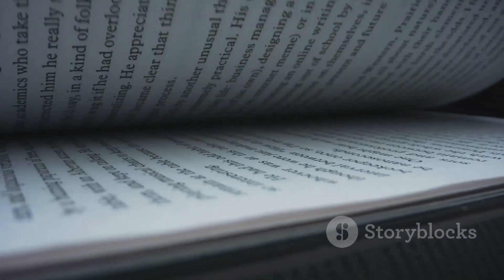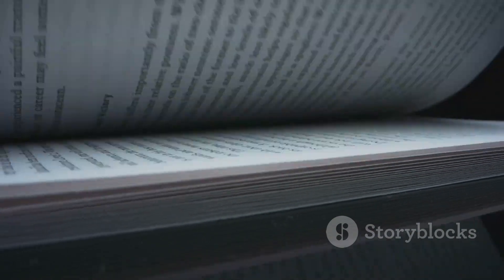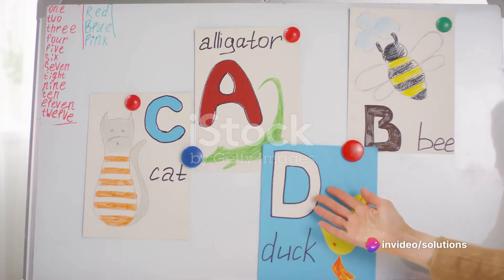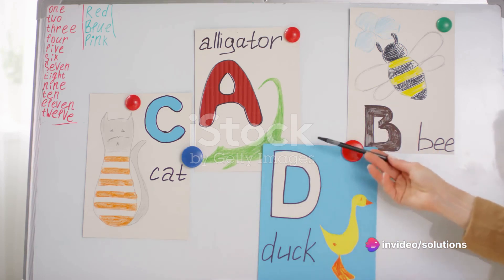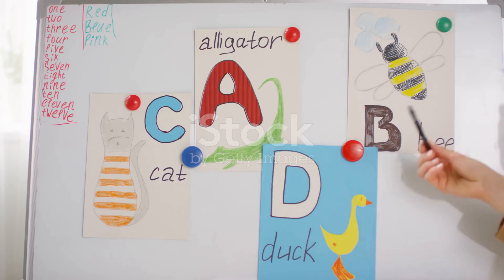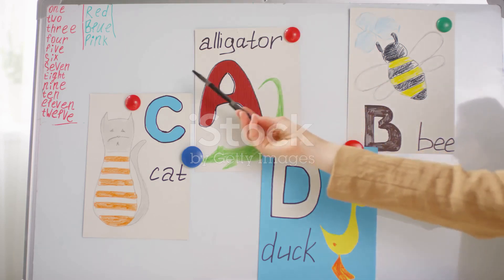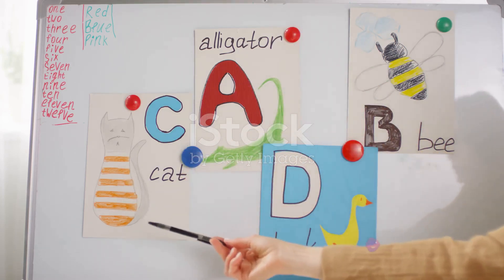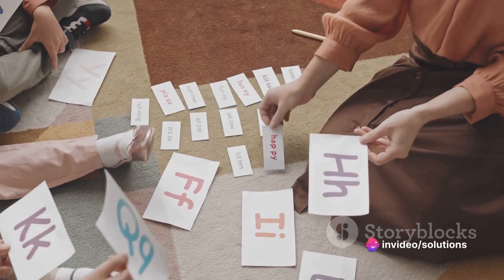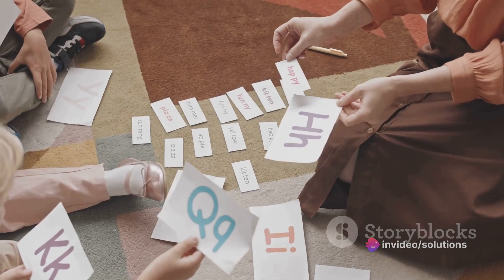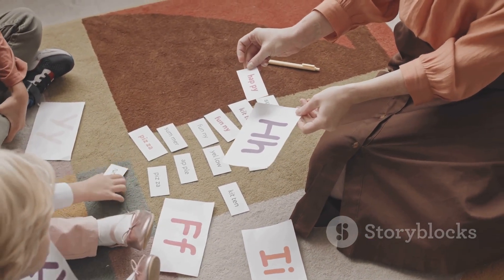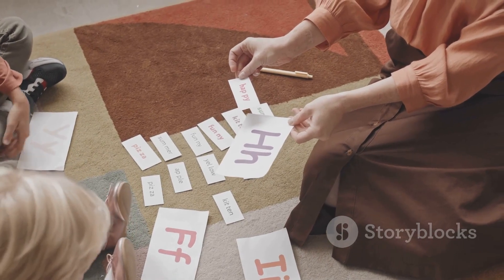Let's dive into some examples. Consider the sentence: the sky is blue. Here 'is' is our linking verb, connecting 'the sky,' our subject, with 'blue,' additional information about the subject. The verb 'is' does not show any action — it simply links the subject to its description. Common linking verbs include is, are, was, were, seem, appear, feel, become, and remain. These verbs form the backbone of our sentences, linking the subject to its complement.